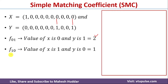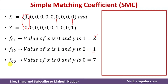Coming to the second variable, F10: X should be 1 and Y should be 0. We have only one such combination, so F10 equals 1. For F00, both X and Y should be 0. We have 7 combinations — you can count them here: first, second, third, fourth, fifth, sixth, and seventh. So F00 equals 7.